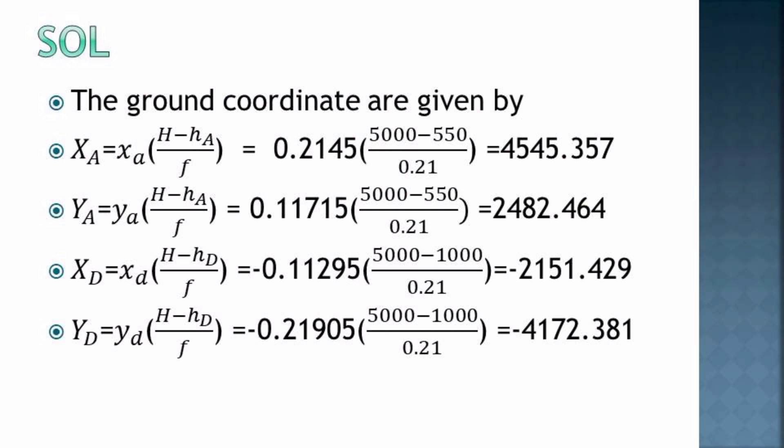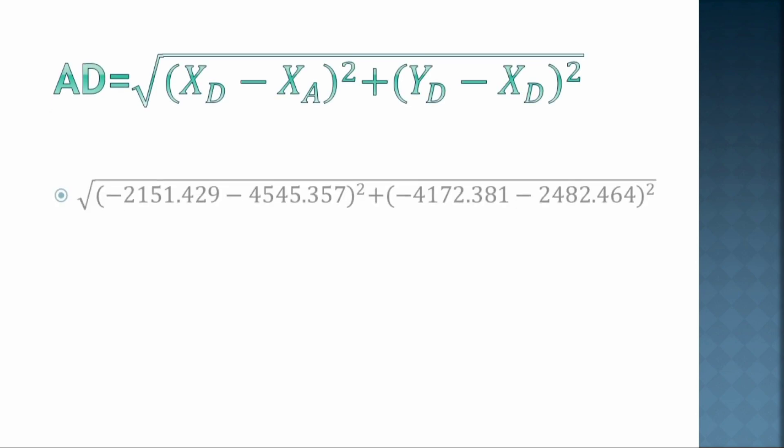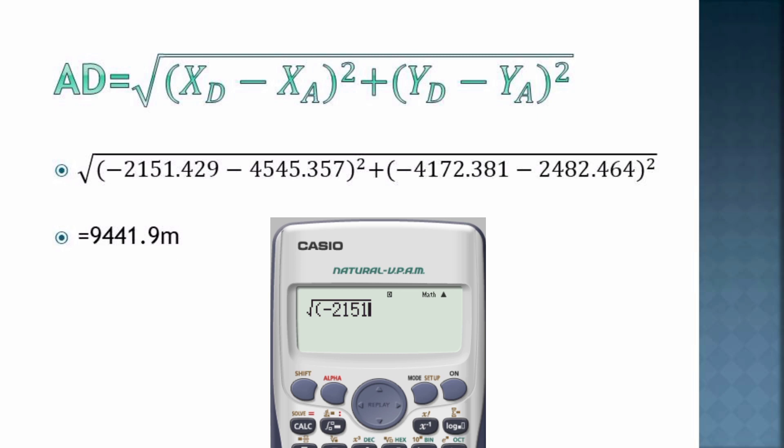After getting that, we come to our final equation. The distance AD equals the square root of the coordinates we already calculated. You input the values from the data we have there. The difference between those ground coordinates under the X-axis squared, plus those under the Y-axis squared. We calculate the square root of all, getting our final answer as 9441.9 meters.